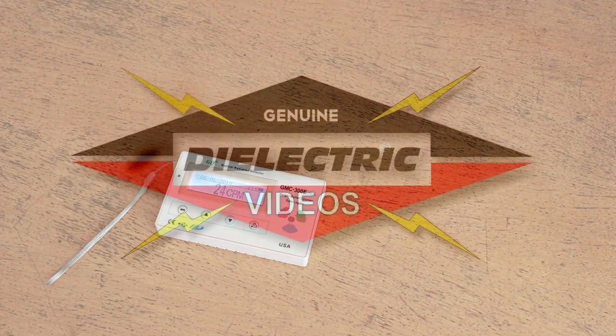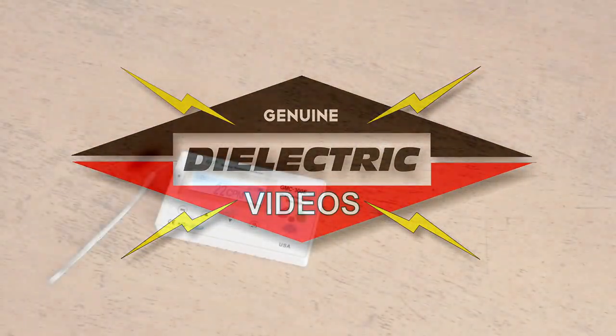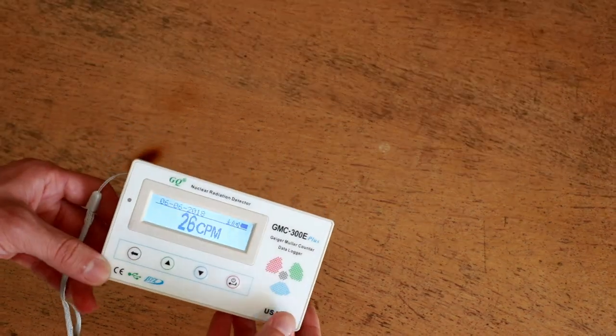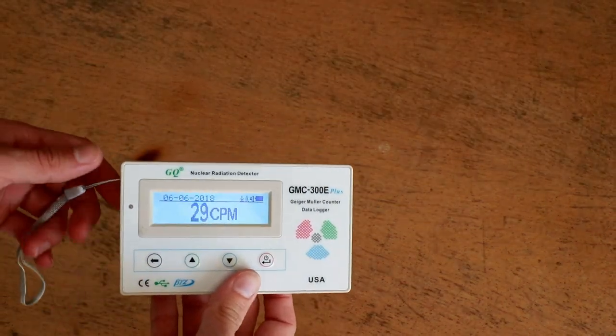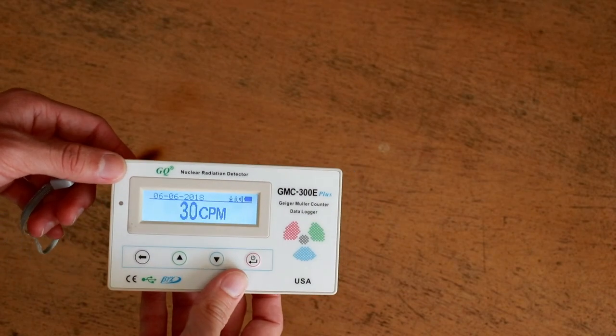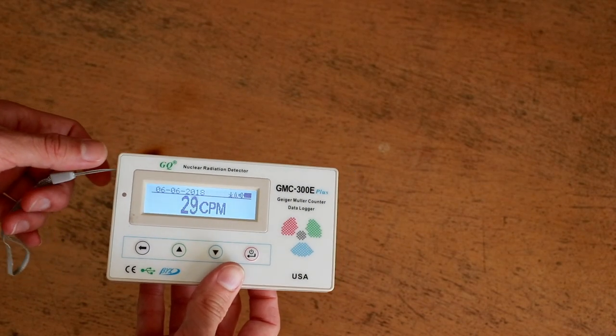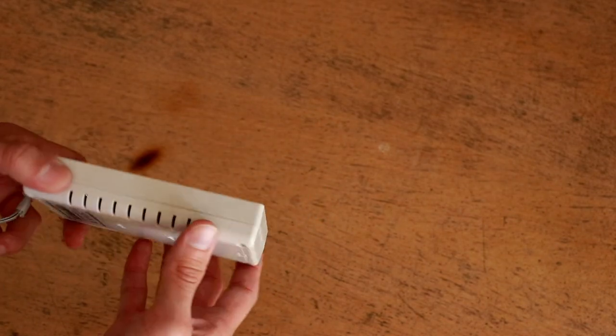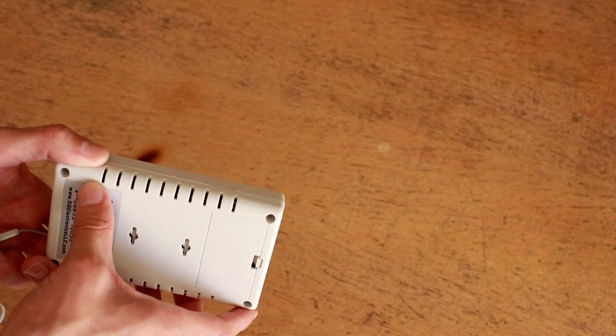Welcome back to Dire Electric Videos. On today's episode, I'd like to show you a new acquisition of mine, which is actually a Geiger counter. You can get these on Amazon and eBay for about $80 to $100. This one I believe was around $90. And this is kind of a cool thing because it has an actual Geiger Mueller tube inside.